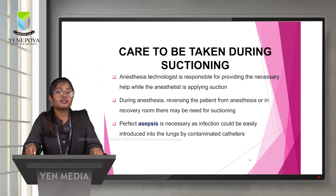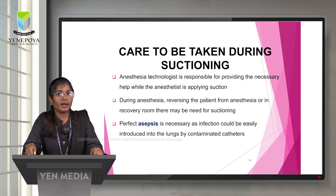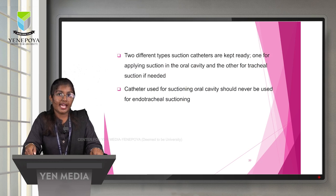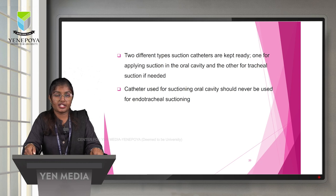The anesthesia technologist is responsible for providing the necessary help while the anesthetist applies suction. During anesthesia, reversing the patient from anesthesia, or in the recovery room, there may be a need for suctioning. Perfect asepsis is necessary, as infection could easily be introduced into the lungs by contaminated catheters. Two different suction catheters are kept ready — one for the oral cavity and another for tracheal suction. Catheters used for suctioning the oral cavity should never be used for endotracheal suctioning.